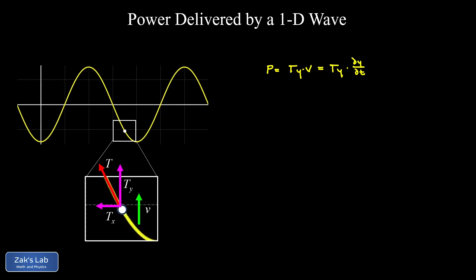The slope of the string is ∂y/∂x, and the steepness equals Ty divided by Tx — but it must be negative here, so: ∂y/∂x = −Ty/Tx. This lets us solve for Ty: Ty = −Tx · ∂y/∂x. Before substituting, we apply the small amplitude approximation.